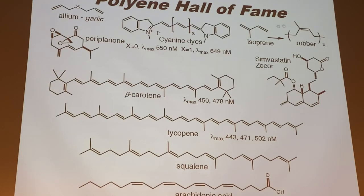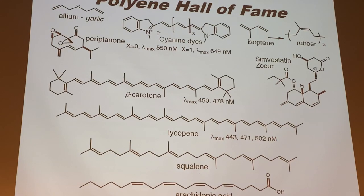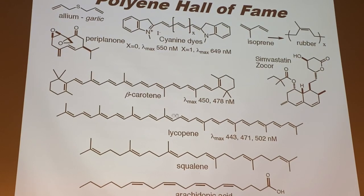Periplanone is the cockroach pheromone — it has a conjugated diene. Simvastatin, sold as Zocor, is a cholesterol-lowering statin drug and also contains a conjugated diene. Lycopene and beta-carotene — carotene from carrots is the precursor to vitamin A — are definitely conjugated polyenes. Their lambda max values refer to ultraviolet spectroscopy. These compounds absorb in the visible range (400–700 nm), absorbing in the blue range and therefore appearing orange and red.